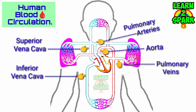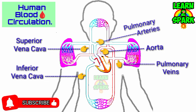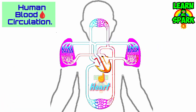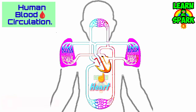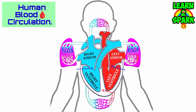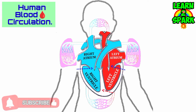Now let's talk about the heart — the pear-shaped, most important muscular organ located between the two lungs, above the diaphragm. It is enclosed in a double-layered sac called the pericardium.